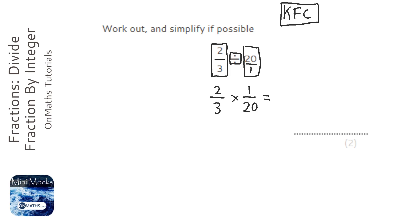Times the tops together, times the bottoms together. And actually, you can simplify that to make that 1 over 30. I've just halved the top and bottom.